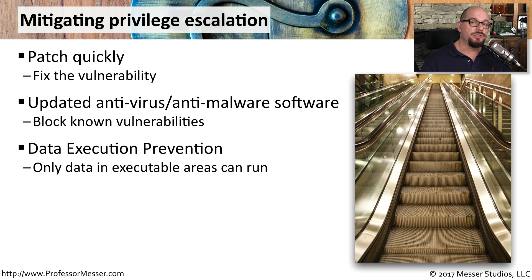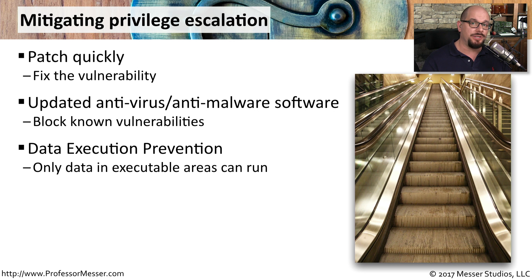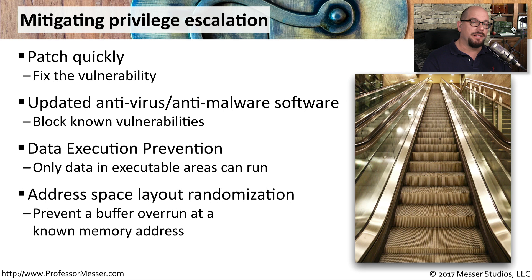There's a function in certain operating systems that can help you as well. This is called data execution prevention. This means that a section of memory is set aside so that executable software can run, while other sections of memory have been allocated as non-executable. So if somebody does try to take advantage of a vulnerability and it's in a part of memory that is not allowed to execute, then that particular vulnerability will not work.